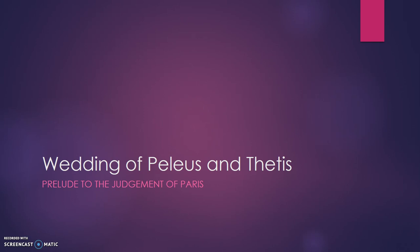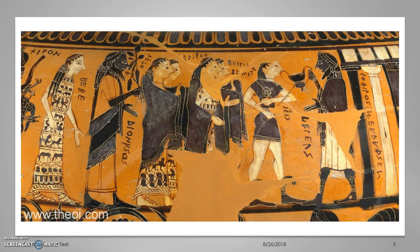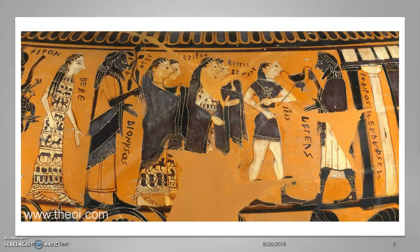One marriage alluded to repeatedly is the wedding of Peleus and Thetis — Achilles' parents. Thetis is a goddess, called a Nereid, daughter of Nereus, one of the gods of the sea. There's a prophecy about Thetis that whichever god or man she sleeps with, the child she bears will become more powerful than its father. Zeus, who originally considered sleeping with Thetis, decides it would be better to marry her off to a mortal, ensuring the child becomes more powerful than a mortal rather than a divine father. So Zeus marries Thetis to Peleus, who is essentially able to wrestle Thetis to the ground and convince her to marry him — but that's another story.